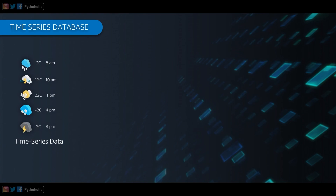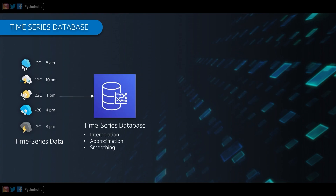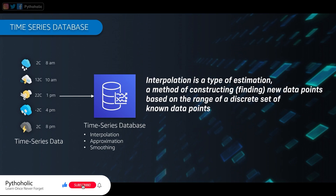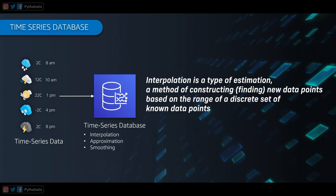When we use Timestream, you have to understand three concepts: interpolation, approximation, and smoothing. When it comes to interpolation, as per mathematics, it is a type of estimation — a method of constructing or finding new data points based on the range of a discrete set of known data points. AWS tells us that if your Timestream data is missing values for certain events at certain points in time, you can estimate those missing values using interpolation. Timestream provides interpolation functions with around four variants: linear interpolation, cubic spline interpolation, last observation carried forward (LOCF), and constant interpolation.